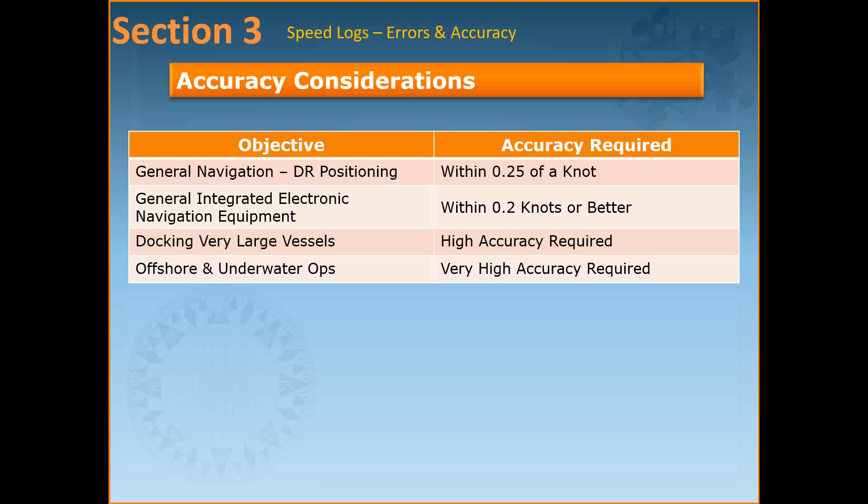In terms of accuracy considerations, generally logs are very reliable but you must understand that speed measurement errors can arise and under what circumstances the log is likely to be inaccurate. Ship speed is difficult to measure accurately but what kind of accuracy do we need? So speed information used for dead reckoning navigation may be satisfactory if accurate to about 0.25 knots depending on the time period and what position fixing is available.